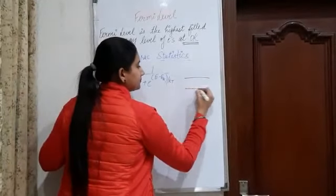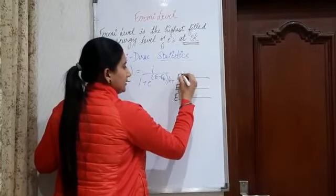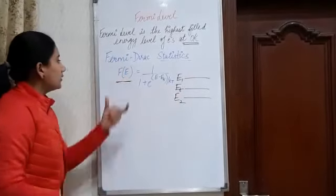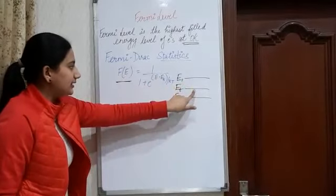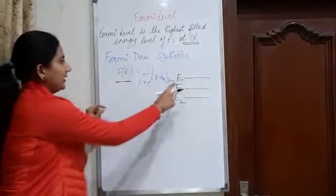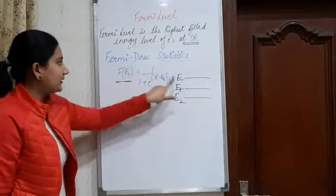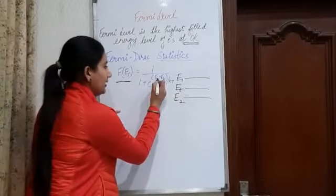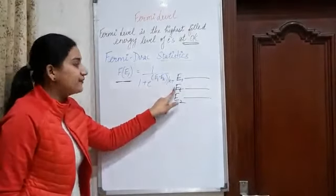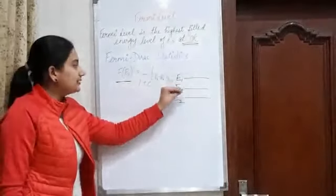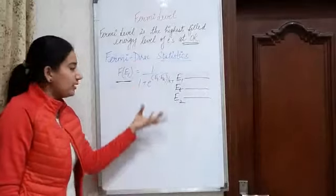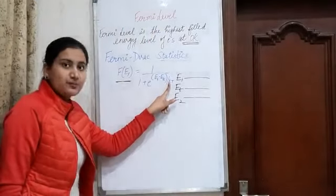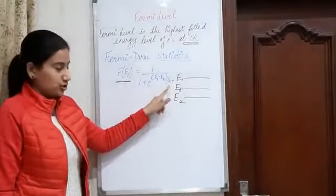Let's suppose these are some energy levels. Let this be E1, this be EF, and this be E2. This equation is going to tell me the probability of finding the electron in a particular energy level. The probability of electrons in E1 equals 1 upon 1 plus exponential raised to the power (E1 minus EF) upon KT, where EF is the Fermi energy level, K is the Boltzmann constant, and T is the temperature.